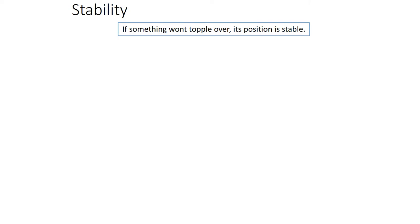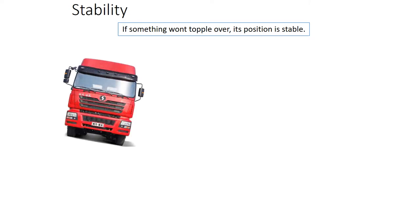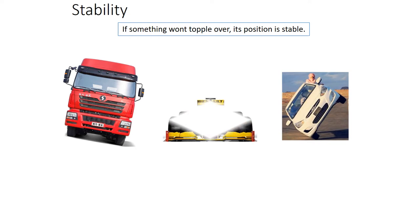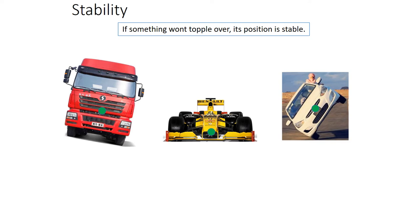If something won't topple over, it is considered to be stable. Looking at some different vehicles: a large truck is built very low to reduce its centre of mass and make it more stable, because trucks can topple if they get caught with a wind or are going very fast. Similarly, a Formula One car keeps its centre of mass really, really low so that it sticks to the road and is less likely to flip.